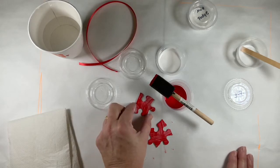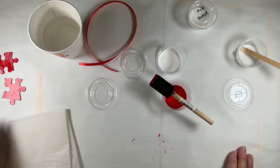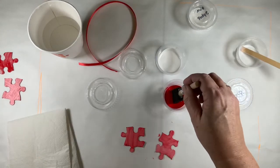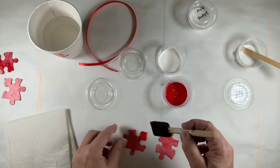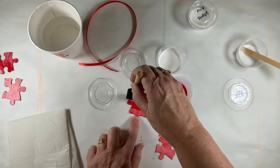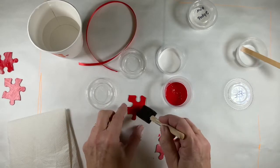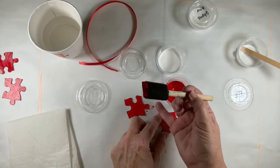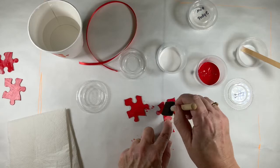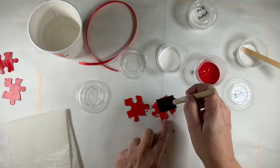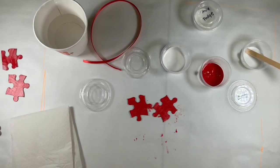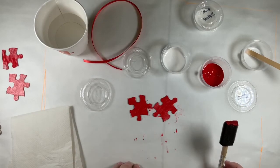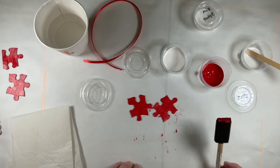All right. And then the puzzle pieces are also going to get two coats, so while I set these to dry, I've already prepared puzzle pieces that we can paint the second coat on. See how it covers so much better when you do two coats.